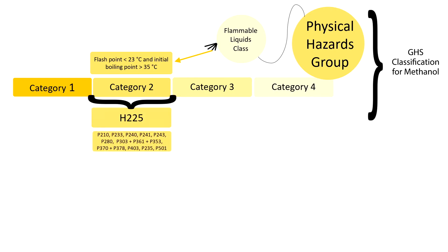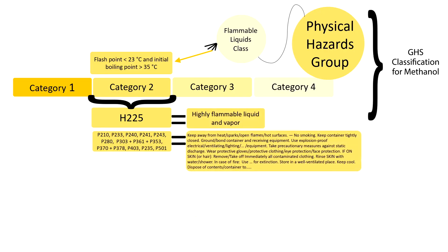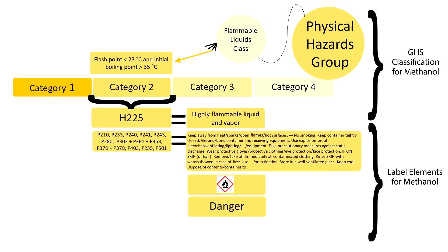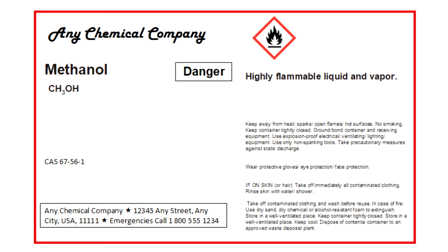Now that we have the GHS classification for methanol, this identifies the hazard and precautionary statements that must be on the label. Instead of the alphanumeric H and P codes, the full text of the statements should be on the label. The pictogram and signal word are also defined by the category and should be on the label. With the addition of manufacturer information, we now have all the label elements related to methanol's physical hazard of flammability.